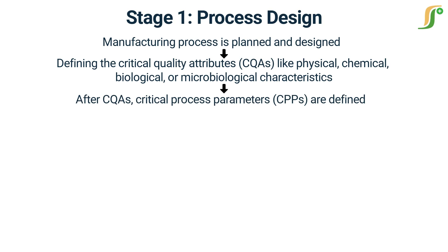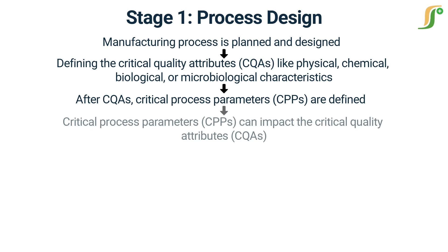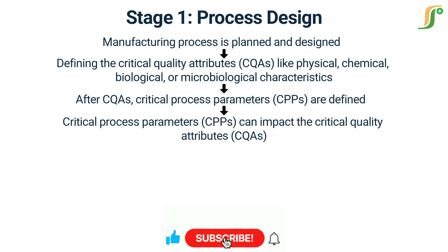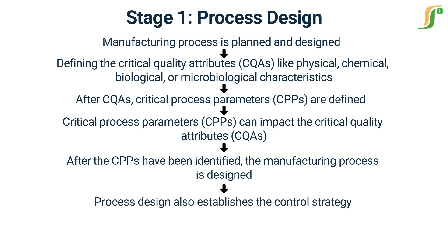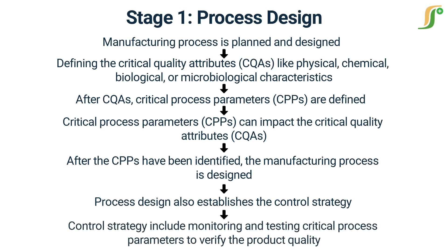Once the critical quality attributes have been defined, the critical process parameters that affect these attributes are identified. Critical process parameters are the factors in the manufacturing process that can impact quality, such as temperature, pressure, and pH. For example, the temperature at which a drug product is manufactured can significantly affect its stability, potency, and purity. After identification, the manufacturing process is designed to ensure these parameters are controlled within defined specifications. The control strategy may include monitoring and testing critical process parameters, and the use of quality control tests to verify that the drug product meets the defined specifications.